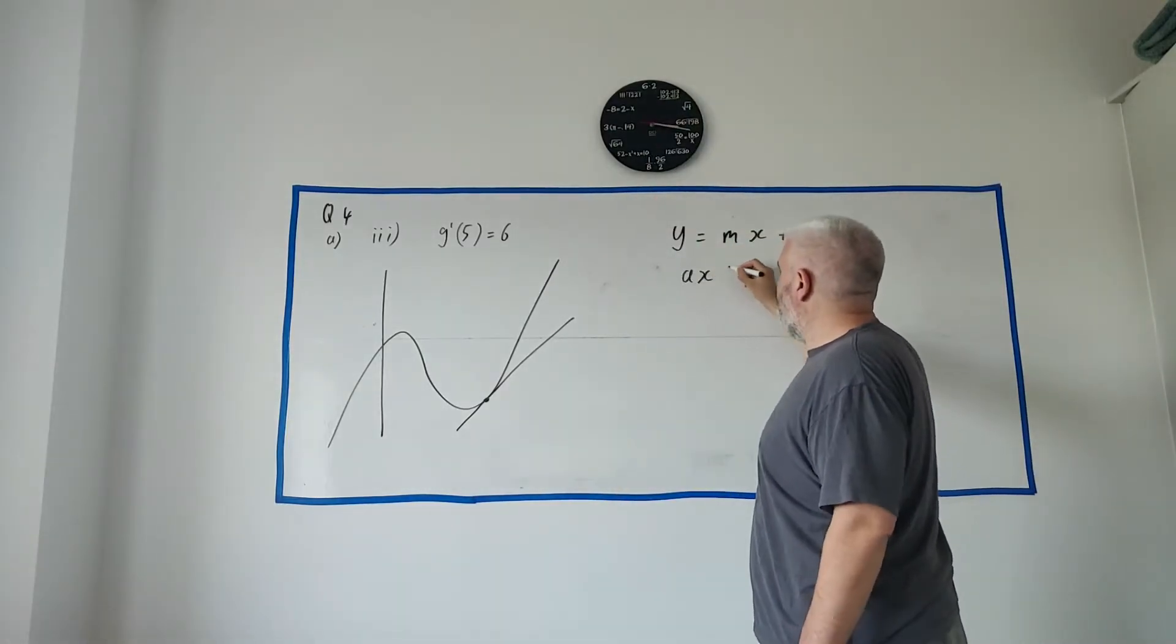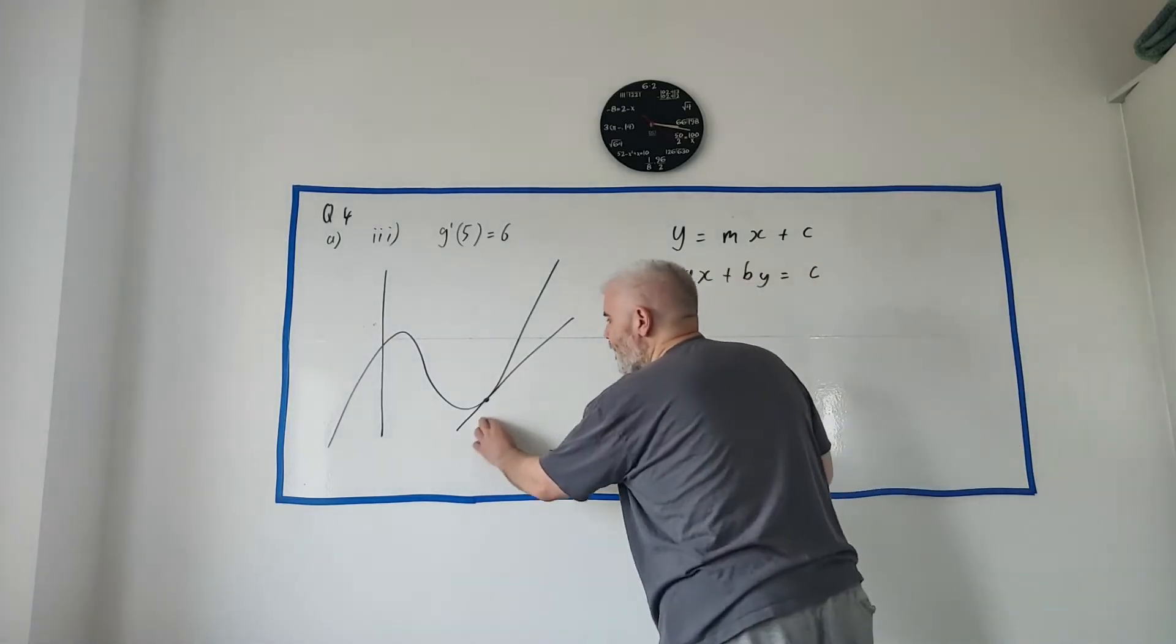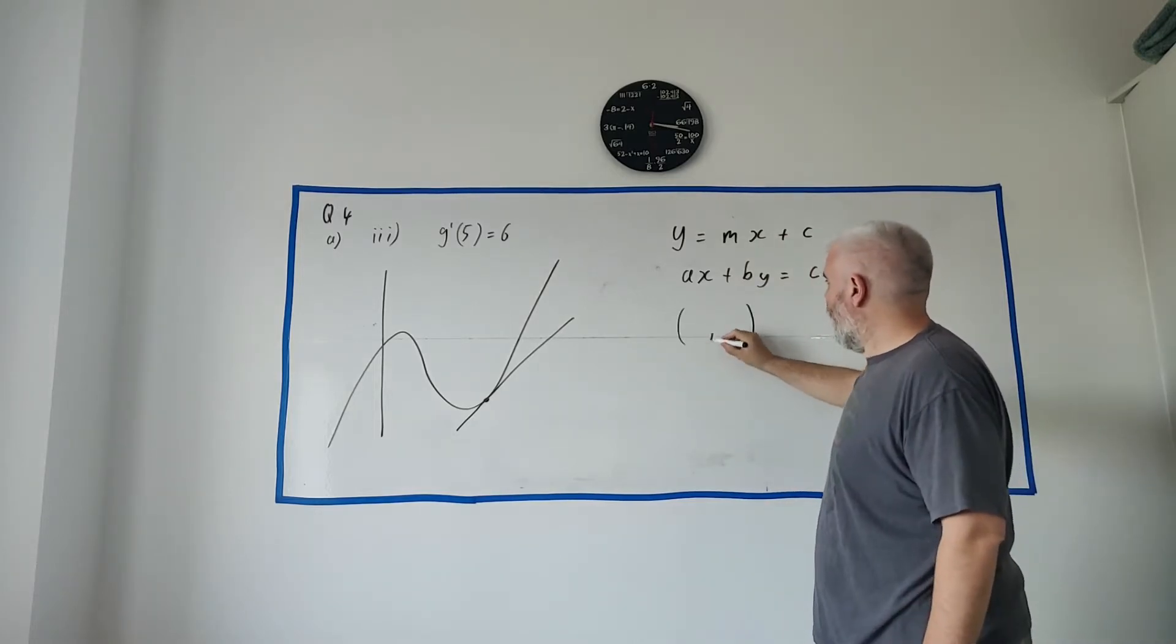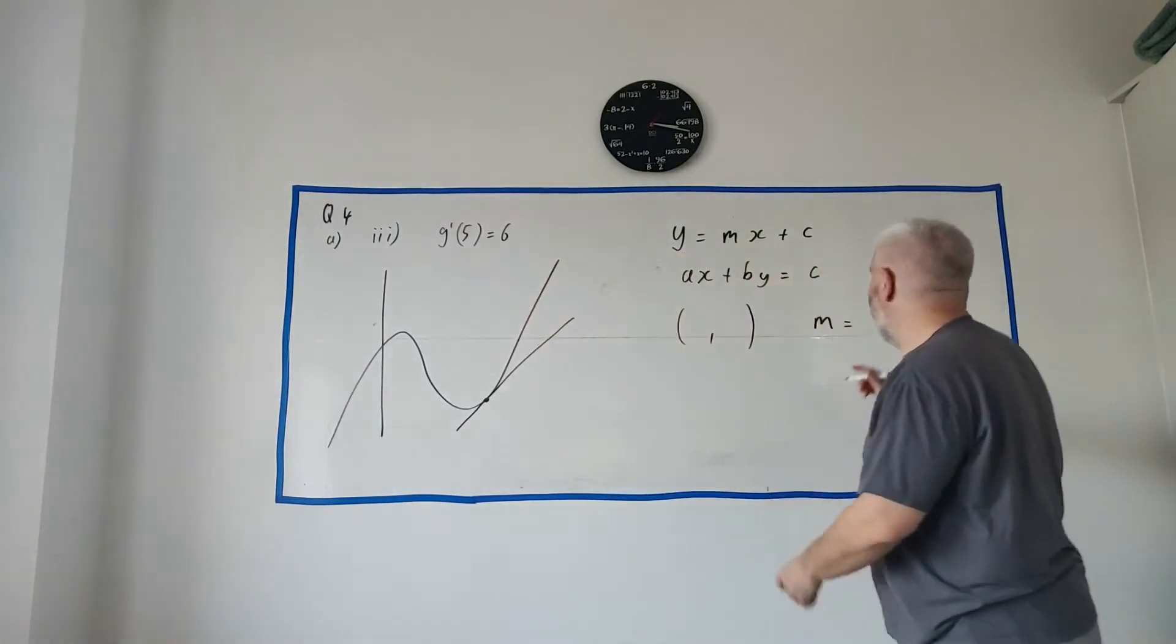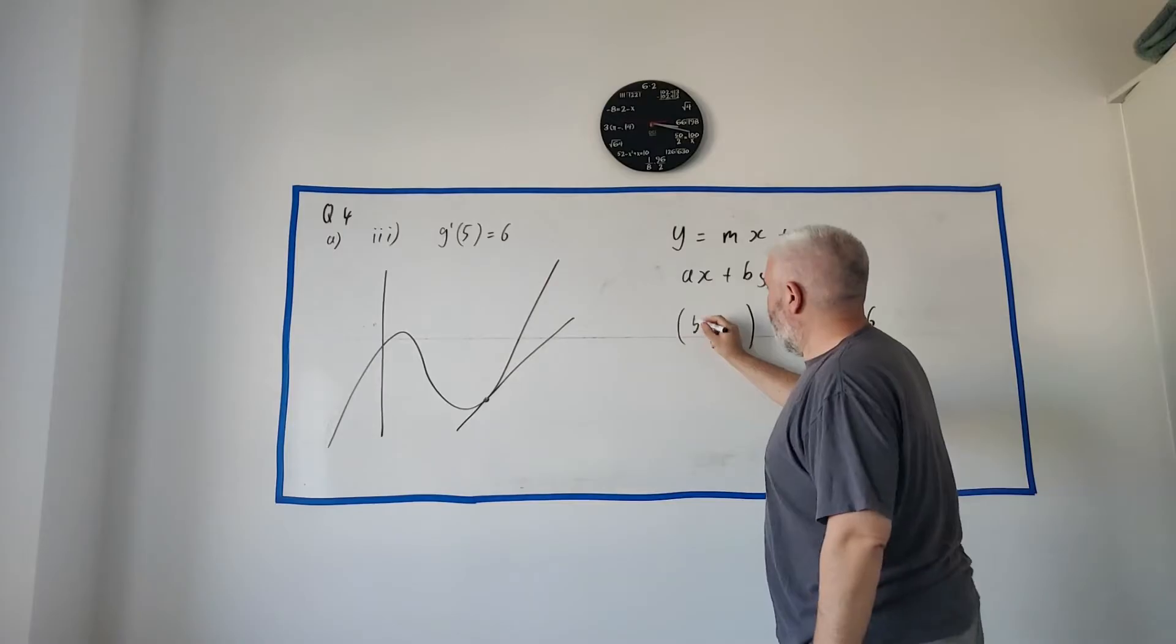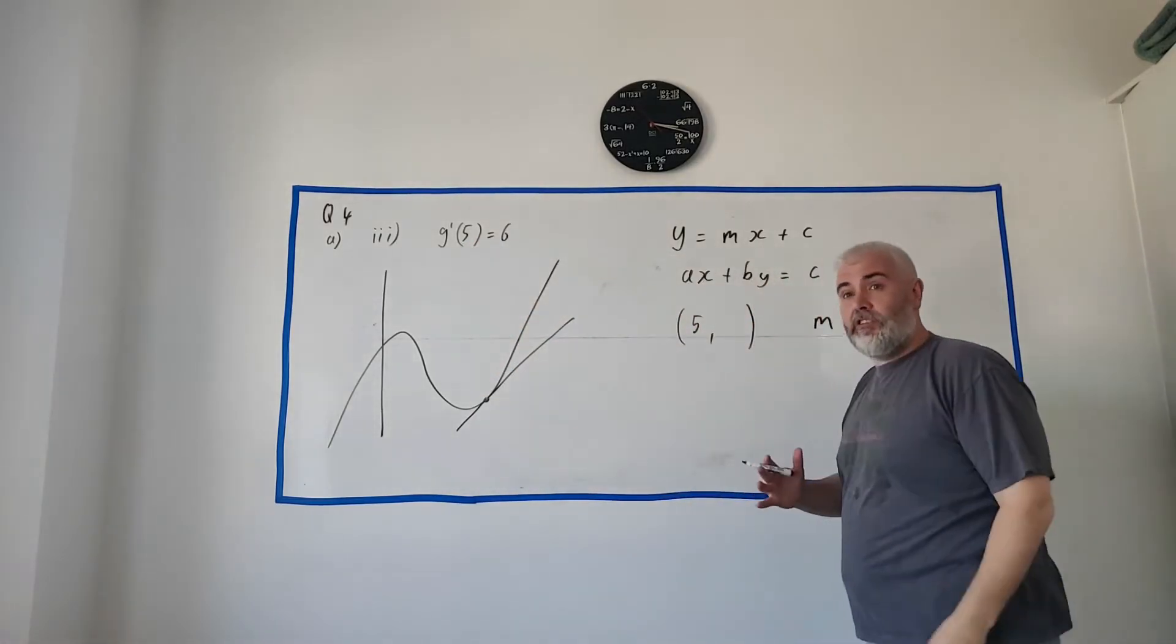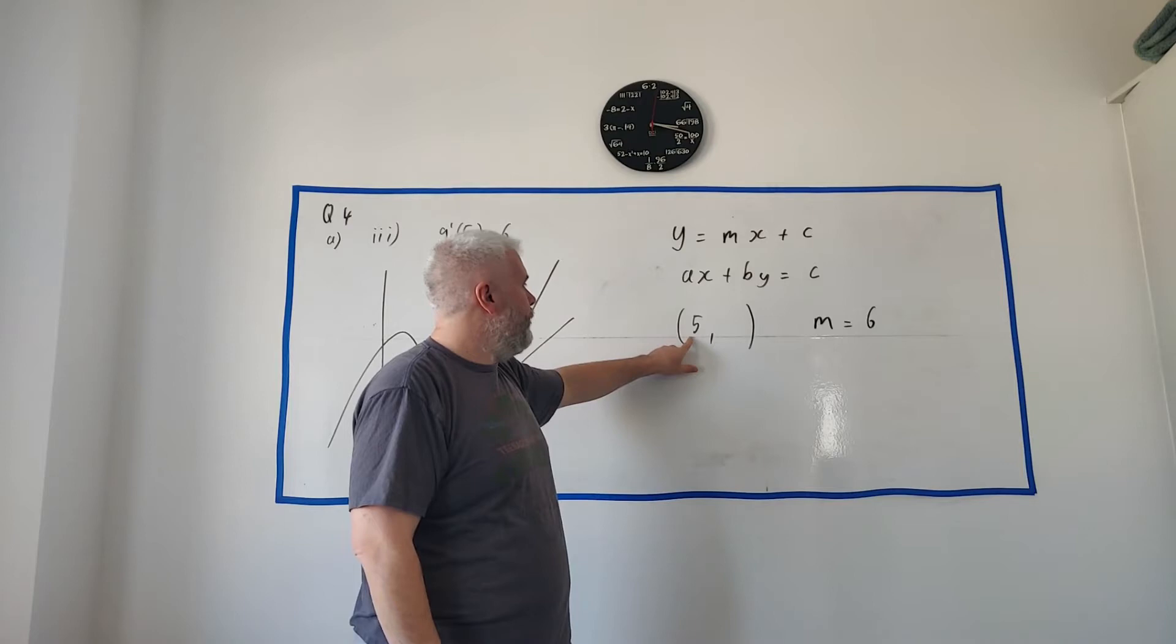So, y is equal to mx plus c. Or, yes, sorry, they want it in the form of ax plus by is equal to c. So, they want the equation of this line here. Again, you don't know what it looks like. What they're asking you to know is an equation of a line needs a point and it needs a slope. And they're asking you to know that this is the slope. 6 is the slope. They've given you the derivative at a point and they've told you the point, they've told you the x of the point is 5. So, the derivative at this point is 6.